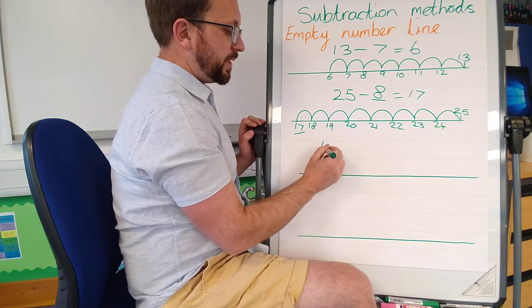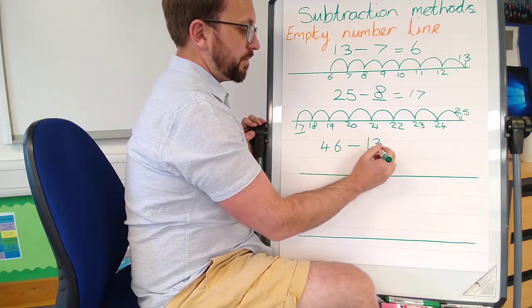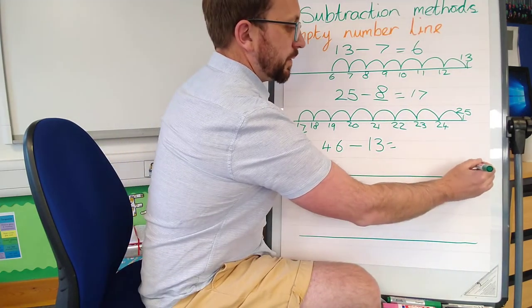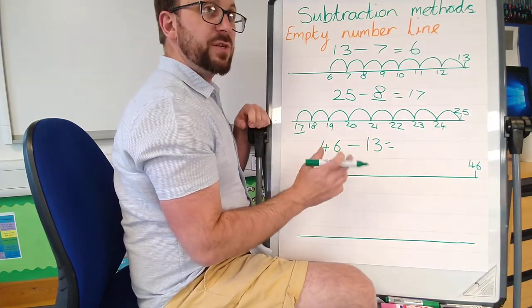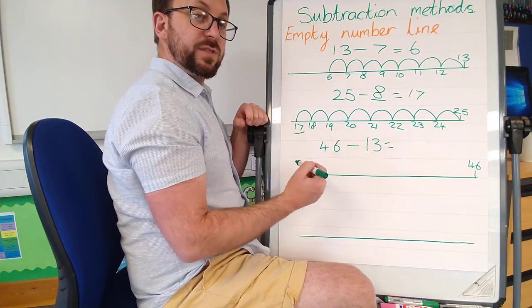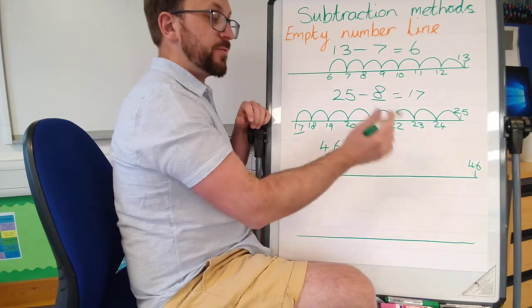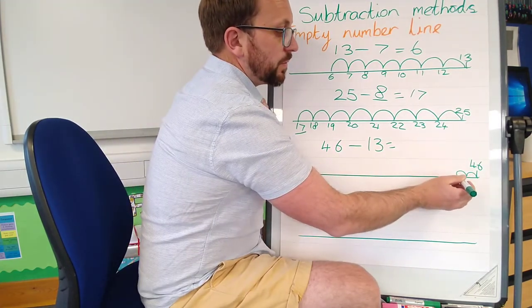46 take away 13. Now you can do this in two ways. You can either do like we did with the addition where we do a big jump of 10 and then three ones, or if your child's not confident at taking away 10, you can do it in ones. So you can do 13 jumps.